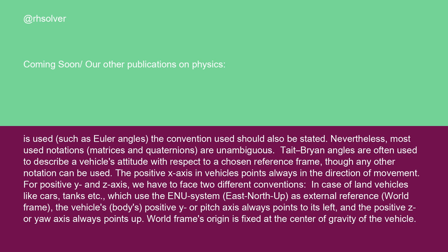Tate-Bryan angles are often used to describe a vehicle's attitude with respect to a chosen reference frame, though any other notation can be used. The positive x-axis in vehicles always points in the direction of movement. For positive y and z-axes, we have to consider two different conventions. In the case of land vehicles like cars and tanks, which use the ENU system (East-North-Up) as external reference world frame, the vehicle body's positive y or pitch axis always points to its left, and the positive z or yaw axis always points up.